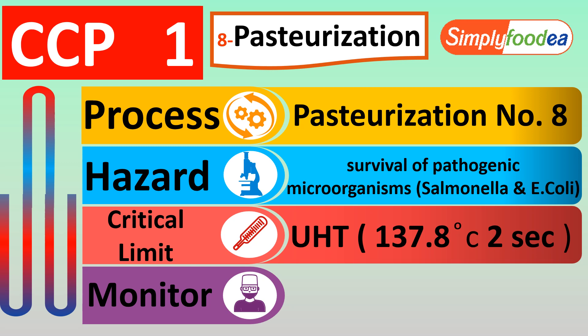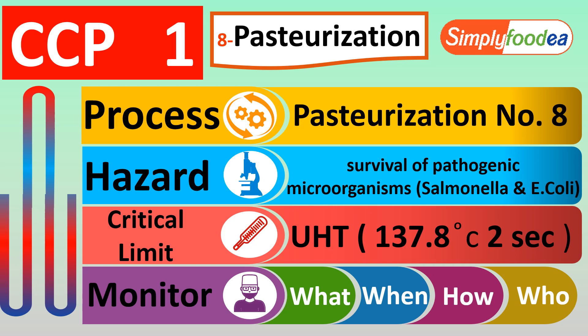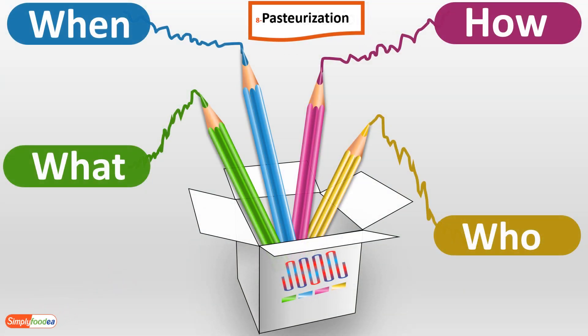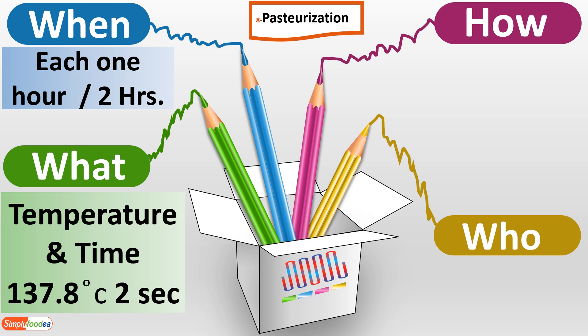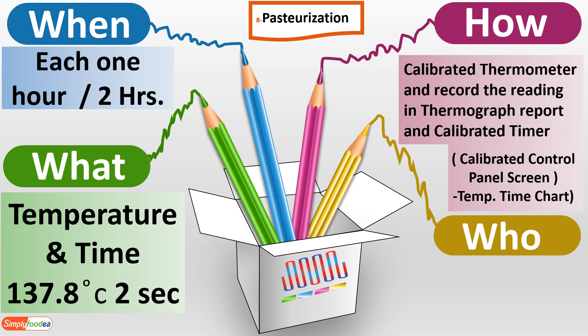Our critical limits in the pasteurization will be ultra-high temperature: 137.8°C for two seconds. For the monitoring, the four main questions are: what, when, how, and who. In pasteurization, we must answer these questions in any document. What we will monitor is the temperature and time — 137.8°C for two seconds. When we will monitor: each one hour or each two hours.